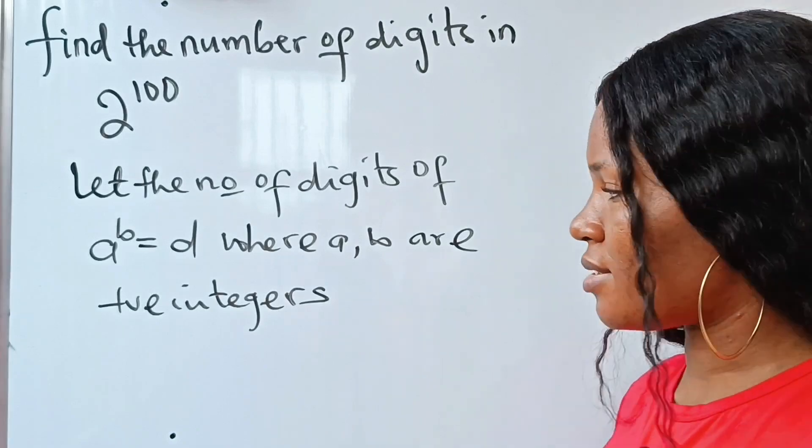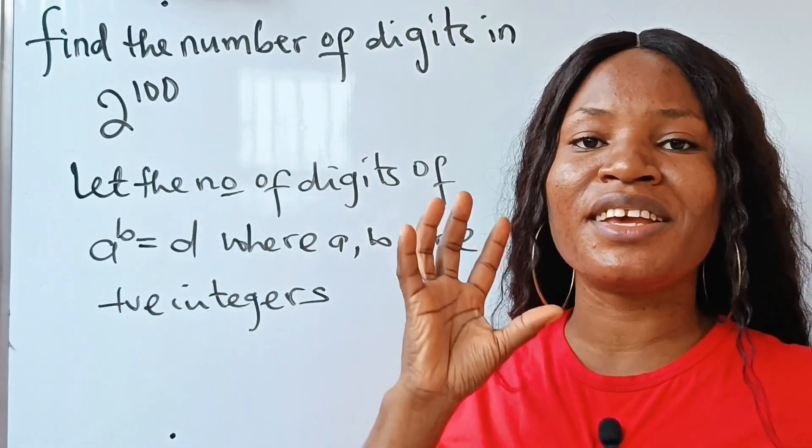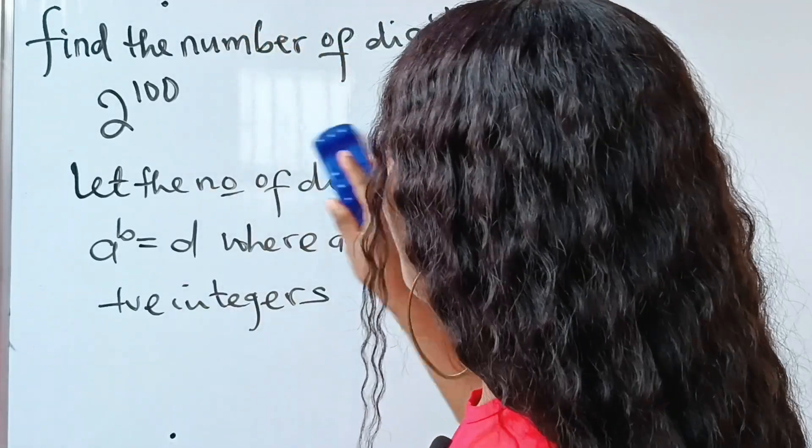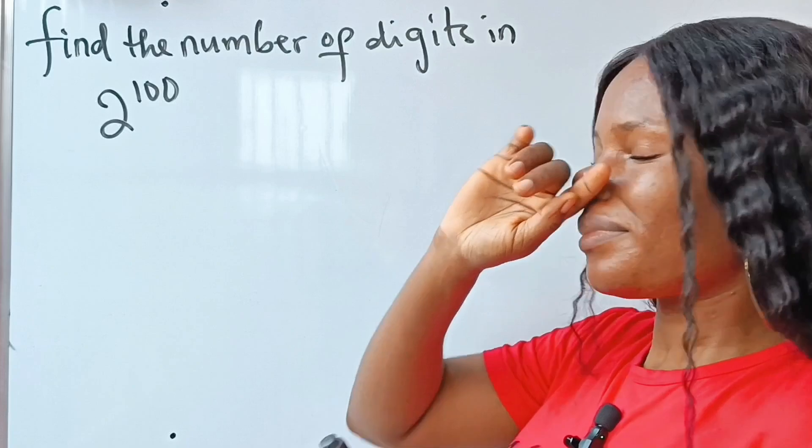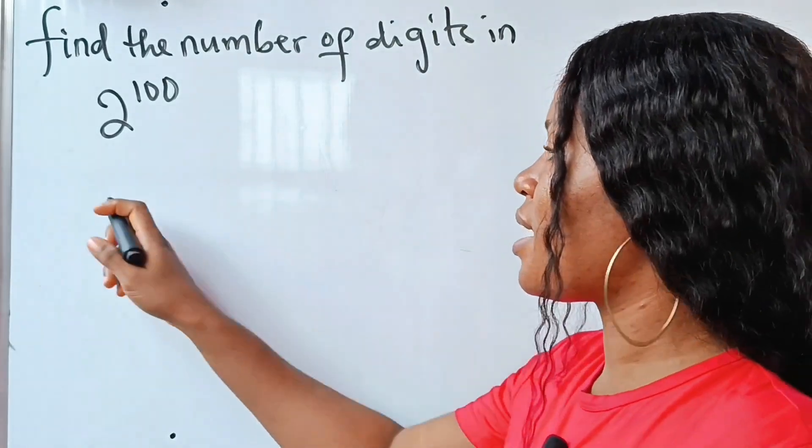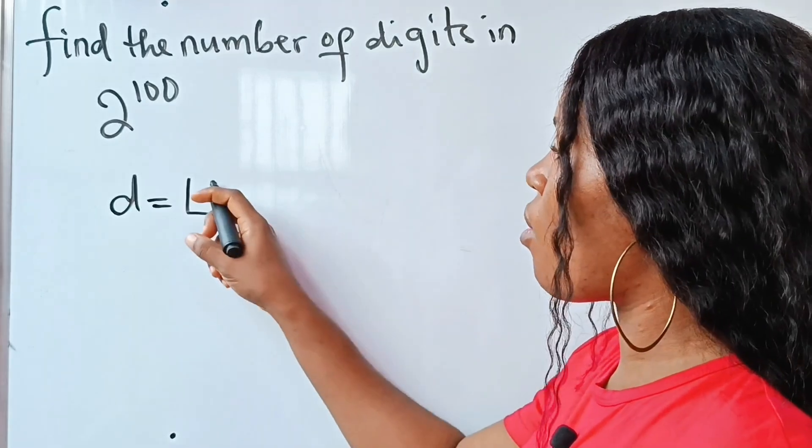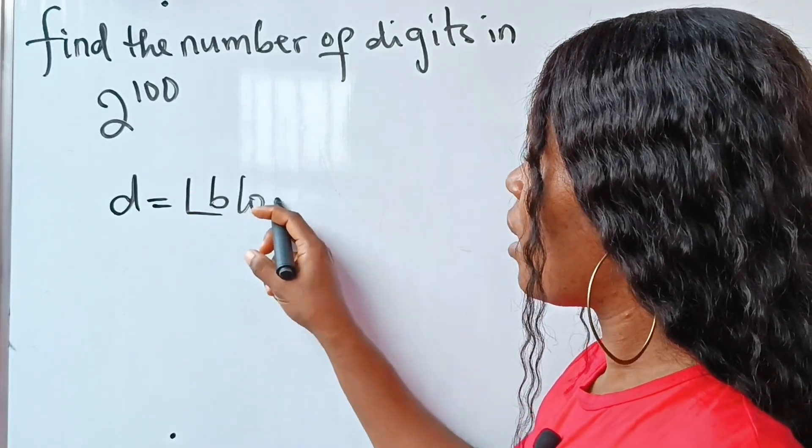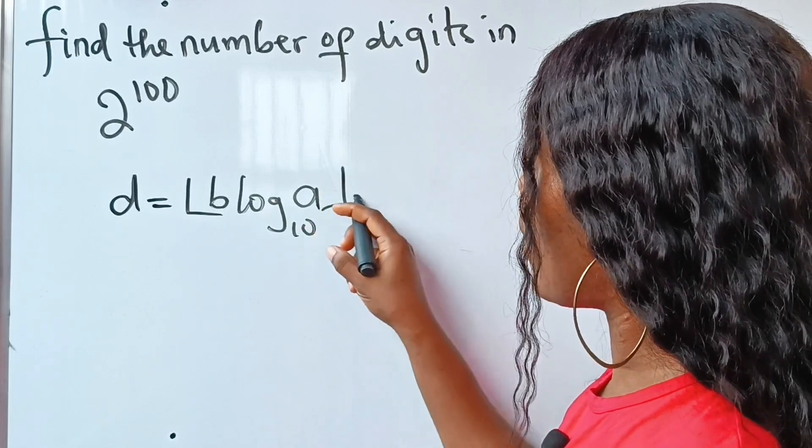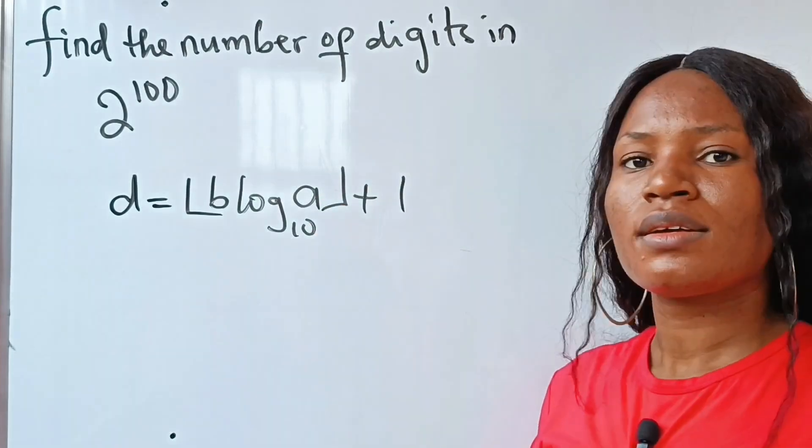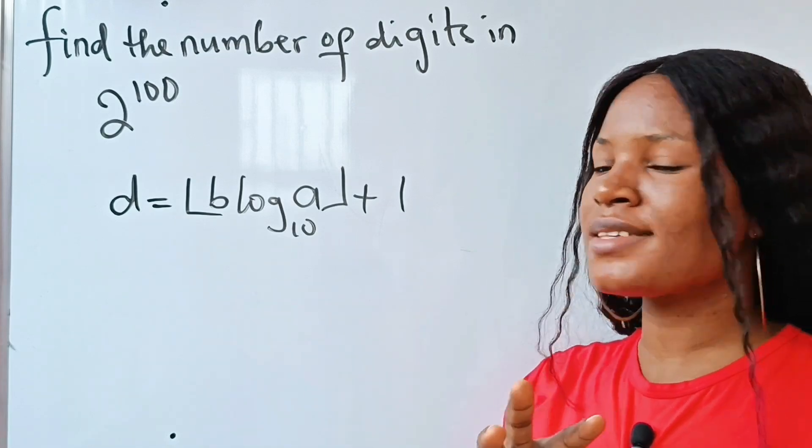The formula states: d is equal to the floor of b multiplied by log to base 10 of a, plus 1. This is the formula. Very interesting, right? Now let's solve.